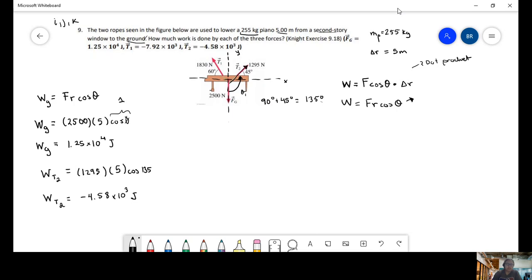And last, we're going to do work of tension 1. So, it's going to be the magnitude of tension 1, 1830 times the magnitude of the distance, 5, and cosine of the angle.